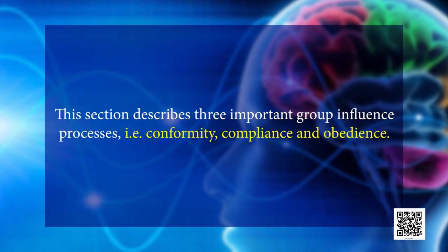In some situations, social influence on us is very strong, as a result of which we tend to do things which we otherwise would not have done. On other occasions, we are able to deflect this influence of others and may even influence them to adopt our own viewpoint. This section describes three important group influence processes: conformity, compliance and obedience.